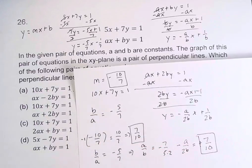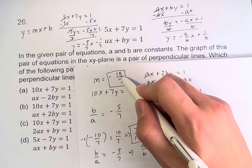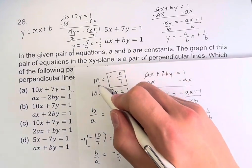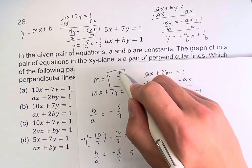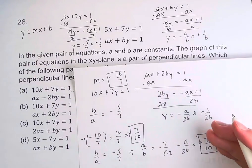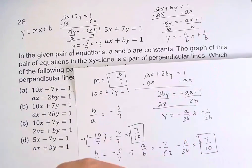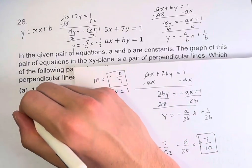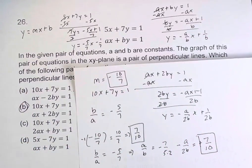Therefore, the opposite reciprocal of the first line's slope equals the slope of the second line, which is exactly what we need. These lines are perpendicular, and B is your final answer.